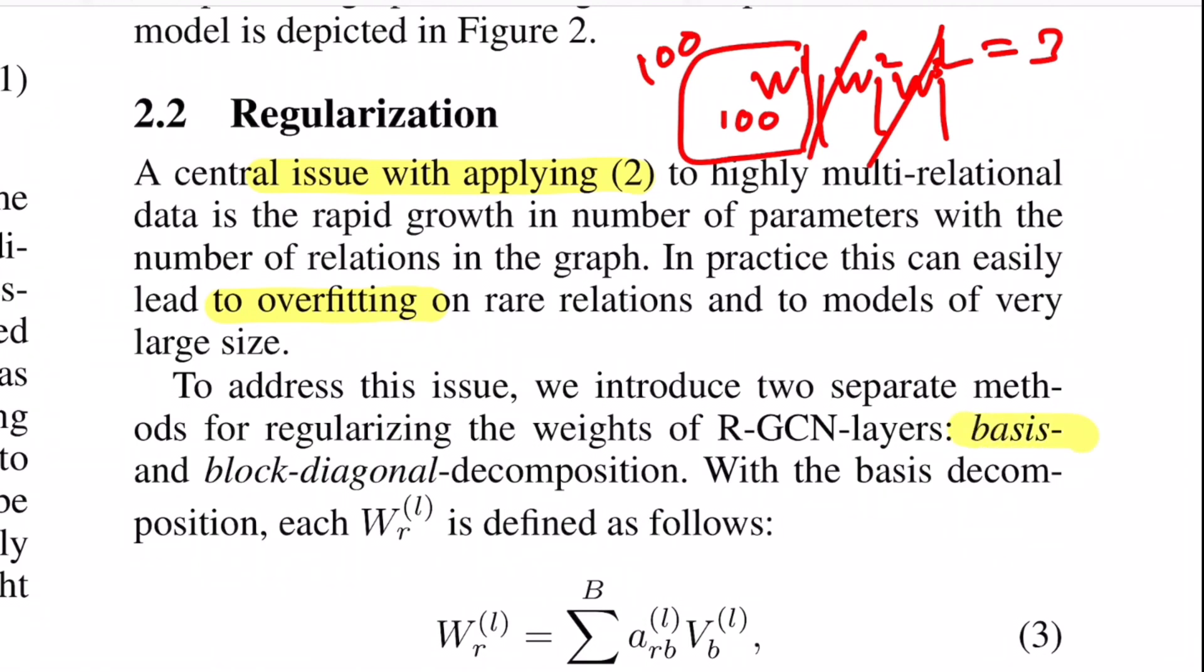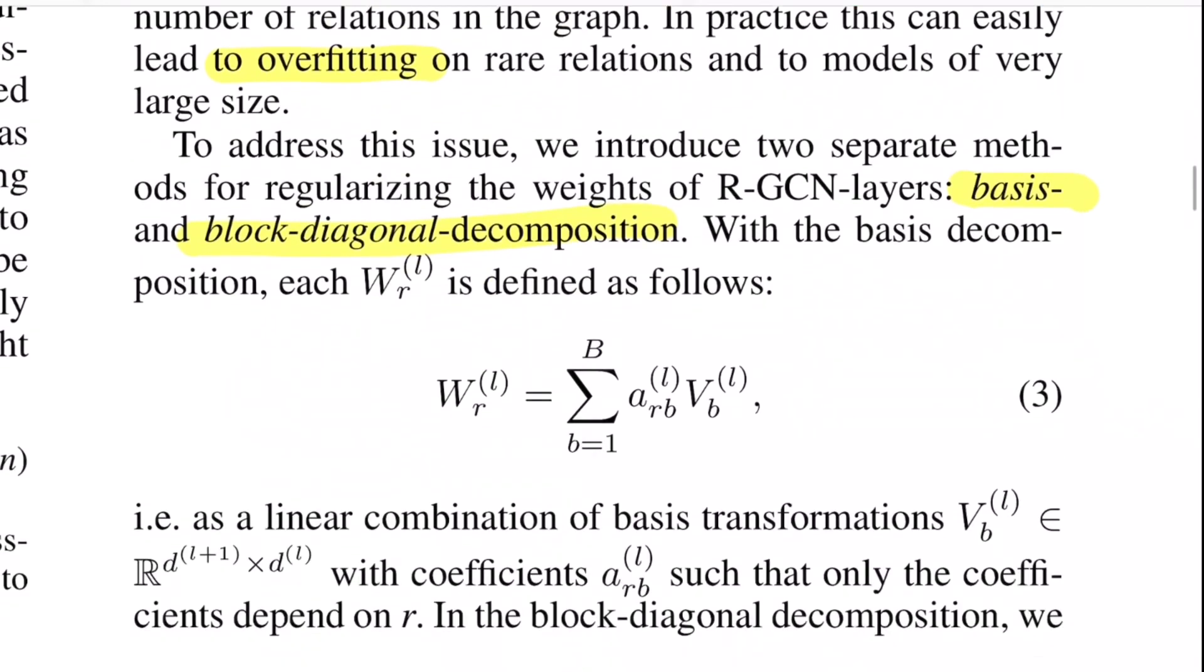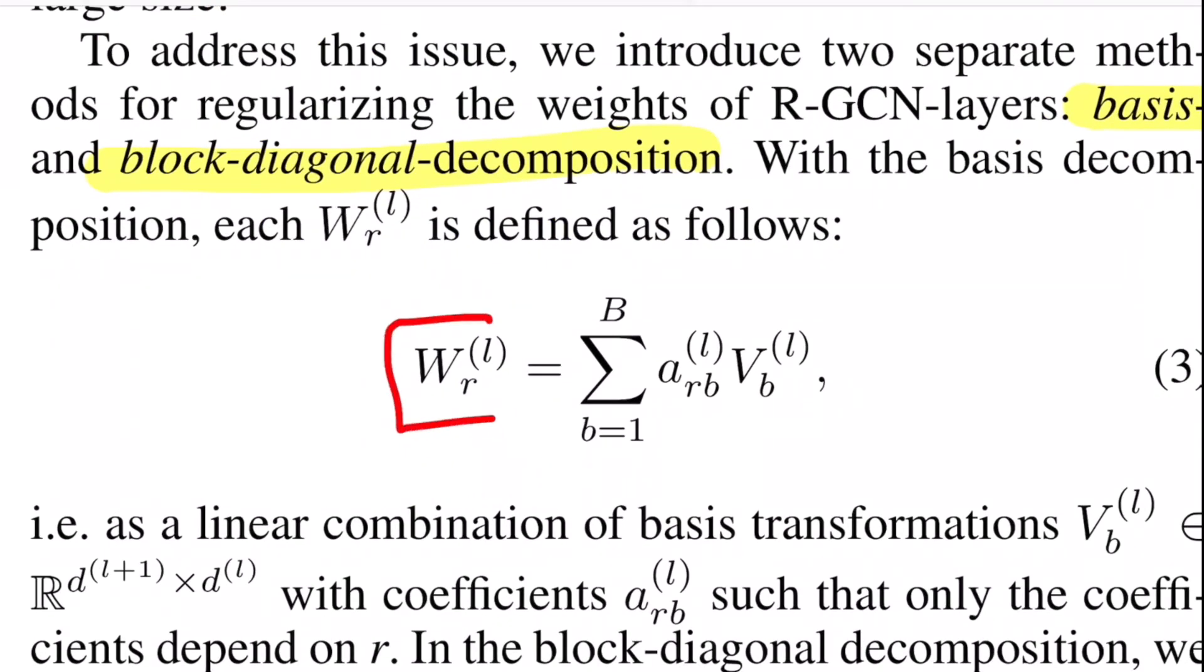One is the basis learning, another is block diagonal decomposition. So let's talk about the basis decomposition. So let's say we want to estimate the weight matrix for the layer L for a certain relation R. So we decompose it as a linear combination of the basis matrix weighted by an importance coefficient.